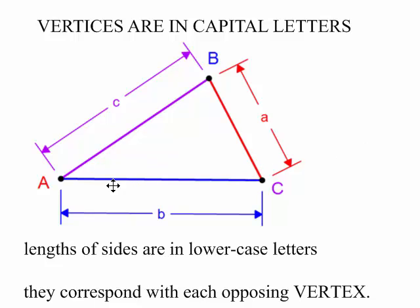All the vertices on a triangle, the corner points, are always in capital letters. In the Law of Sines, we're going to designate each vertex as a capital letter, and then see how this letter is a capital A, follow it across. We're going to use a lowercase a to indicate the length of the side opposing that vertex.